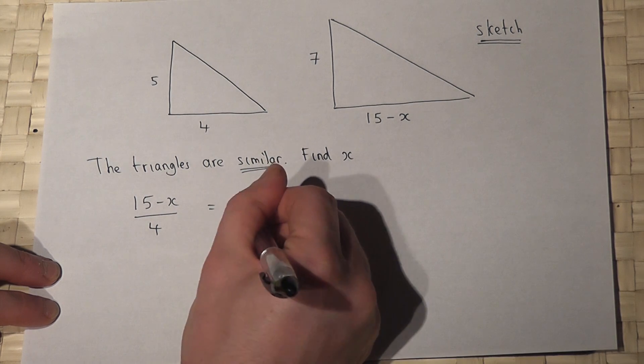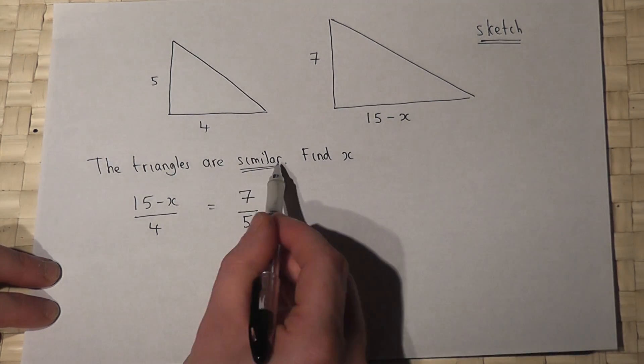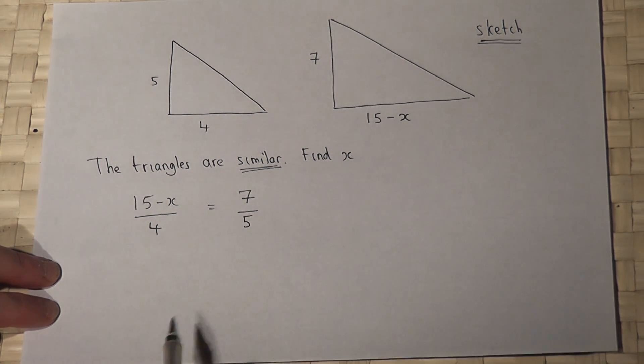So I can therefore set up an equation for x. Again, similar means the ratio of corresponding sides are equal.